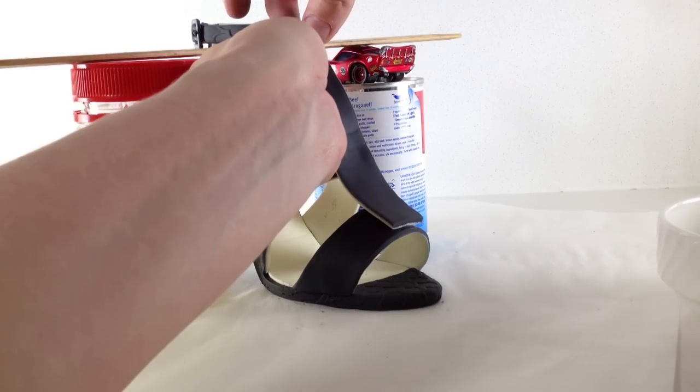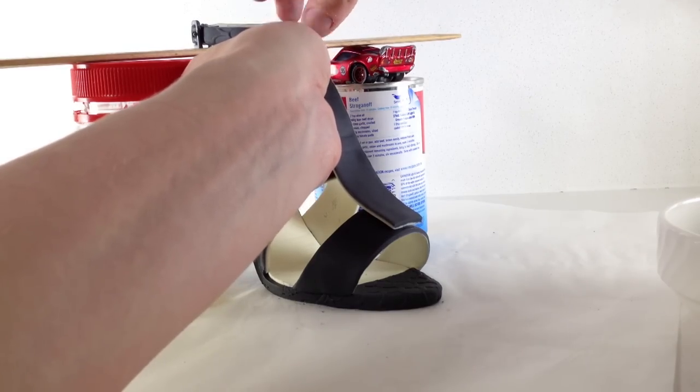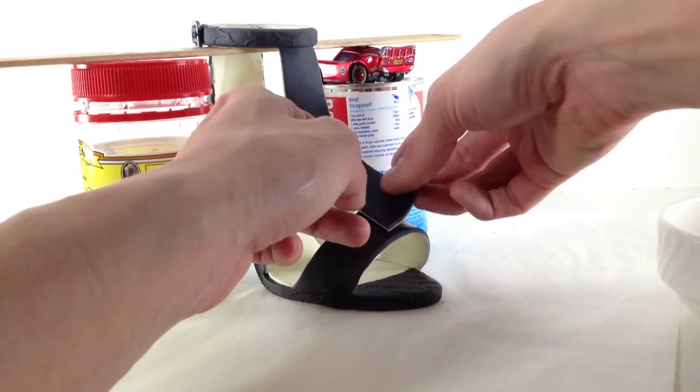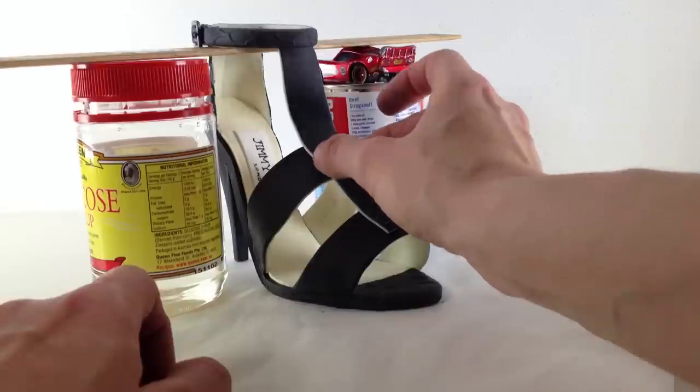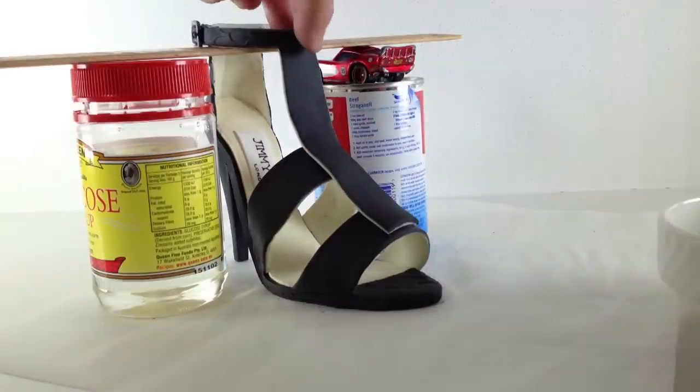Slightly dampen the top of the strap and then the top of the bottom two loops that are on the shoe, and attach it underneath the ankle strap and over the top of the other two loops.